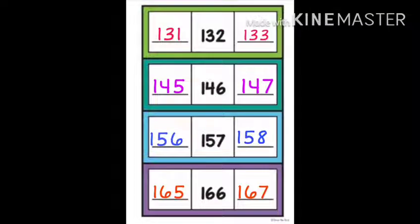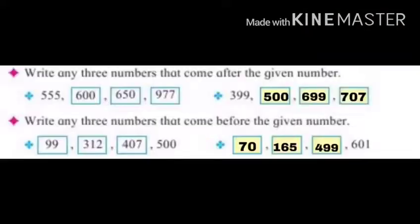Number given is 132, what is before number? 131 and after number? 133. Then 146, before number is 145, after number is 147. Then 157, before number is 156, after number is 158. Then 166, before number is 165, after number is 167.